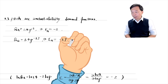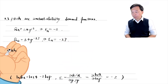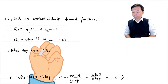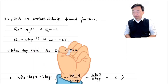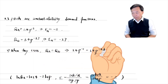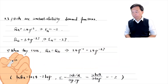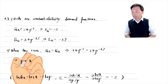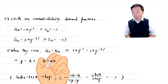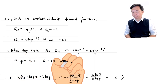In the second step, when the two demand curves cross, the quantities demanded are equal. We can solve for the price, which is one dollar. At this price, the quantity is 1.4 million apps.